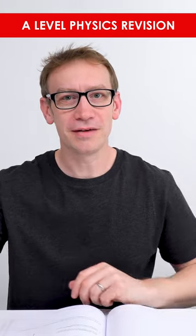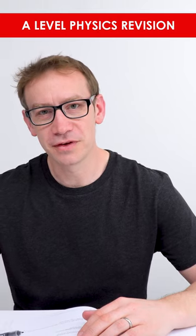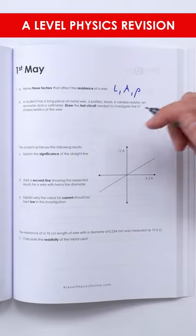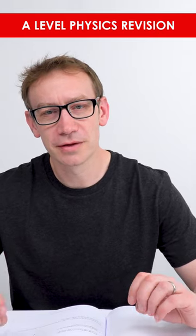The question on the 1st of May is about the resistance of wire. Three factors that can affect the resistance include the length, the cross-sectional area, and the resistivity of the material it's made out of.